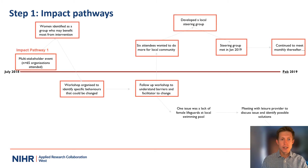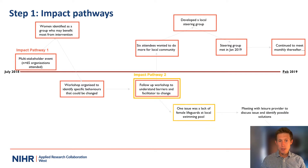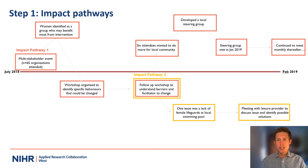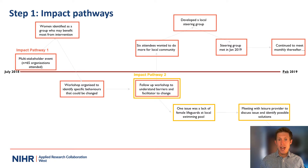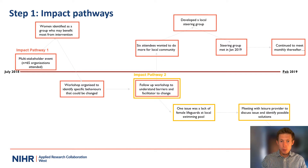Here you can see that we identified the beginnings of two impact pathways. The first one is about the establishment of a steering group, and the second one is about the need for female instructors within a leisure centre. Now these pathways are simply chains of connected actions, activities and impacts, and the nice thing about these impact pathways within this example is that they're all interconnected.